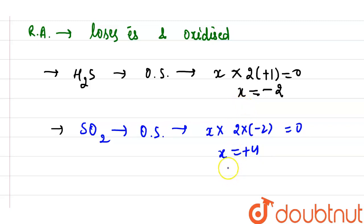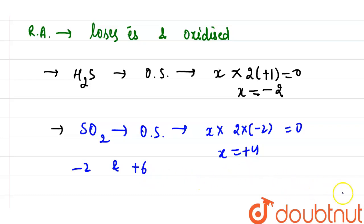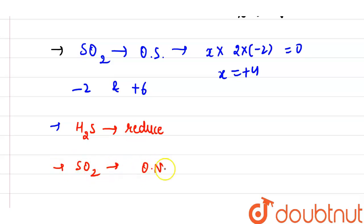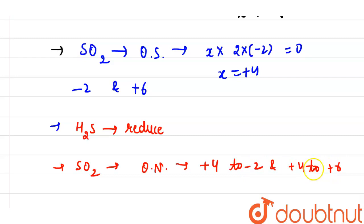The oxidation state of sulfur in H2S is -2, whereas in SO2 it is +4. The minimum oxidation state of sulfur is -2 and the maximum is +6. Since sulfur in H2S is already at -2 (the minimum), it can only lose electrons — that is, it can only act as a reducing agent. In SO2, sulfur is at +4, so it can either decrease to -2 or increase to +6, meaning it can act as both a reducing and an oxidizing agent.